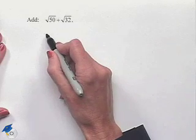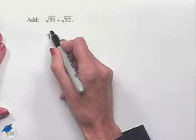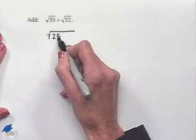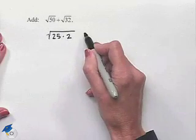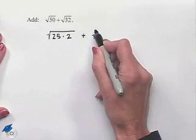For the square root of 50, we notice that we can rewrite that as the square root of 25 times 2. For the square root of 32, we know that this is equivalent to 16 times 2.